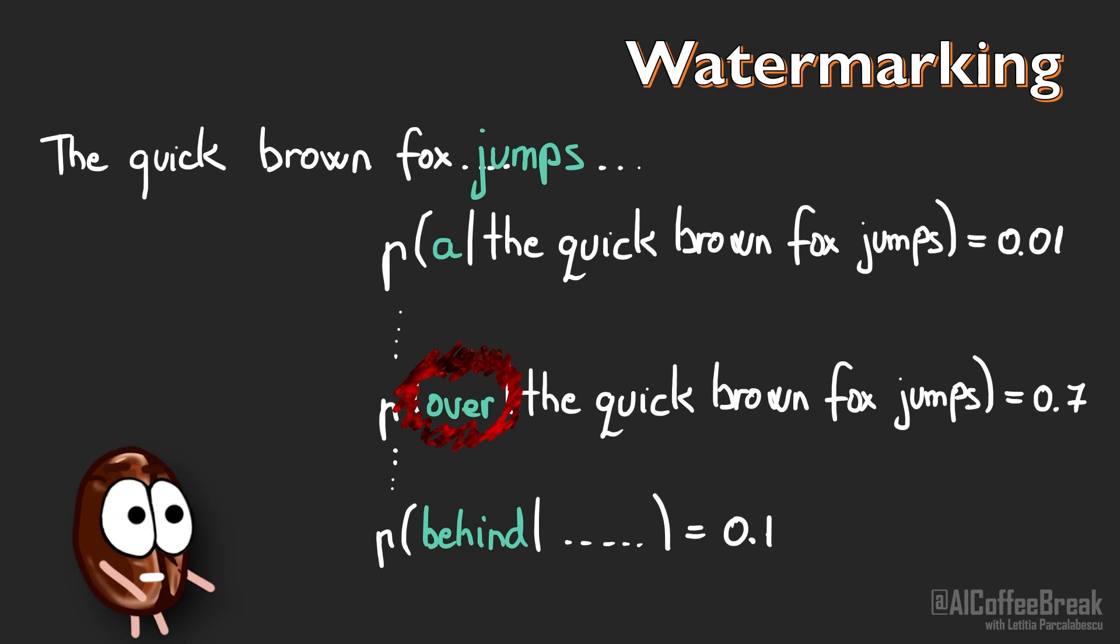And to detect generated text by this language model, one needs to detect the watermark and this is fairly easy. One goes through the generated text and counts the blacklisted words. And we get a blacklist by knowing the random number generator used to choose the blacklist words and the seed. The watermarked language model would not use blacklisted words, because it can't.